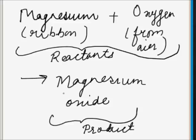And the products thus formed have properties which are entirely different from those of the reactants. In this reaction, there are two reactants — magnesium and oxygen — and they are producing one product, which is magnesium oxide.